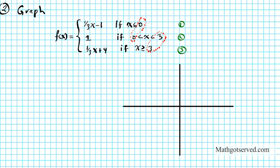We're going to partition our coordinate plane into three sections. The first section will be partitioned along the line x equals zero. And then the next one is along the line x equals three — throw down your partition. This basically means function one should be restricted to this half-space on the left. Function number two is restricted to the tiny middle region. And function three is restricted to the entire region on the right.